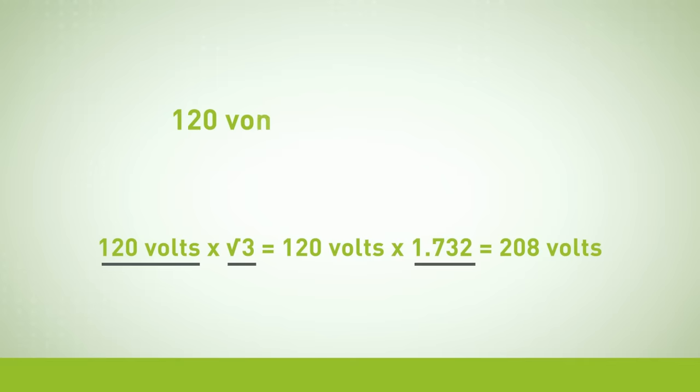For two lines, each carrying 120 volts, the calculation for this is 120 volts times 1.732 and the result is rounded up to 208 volts.